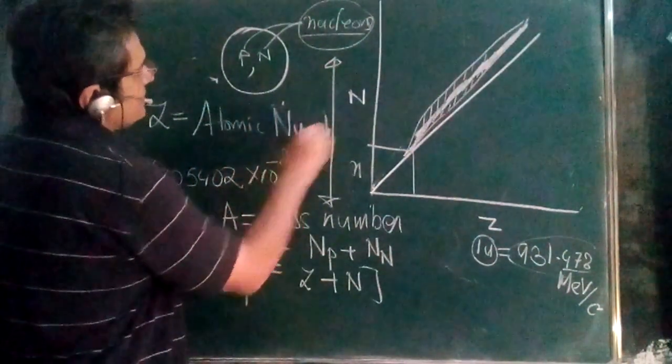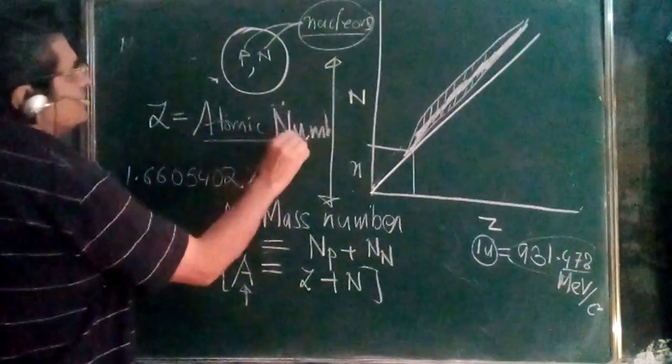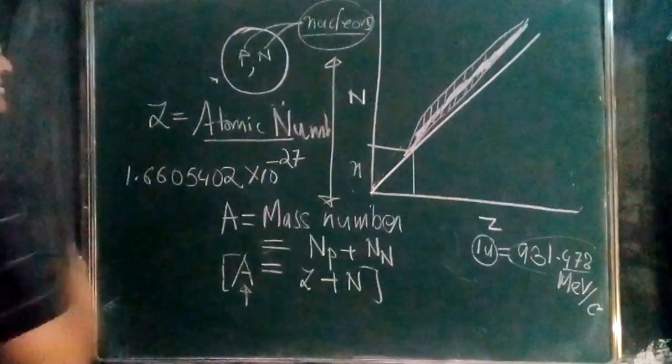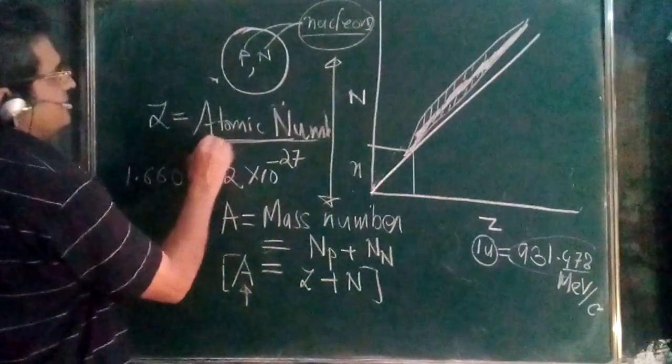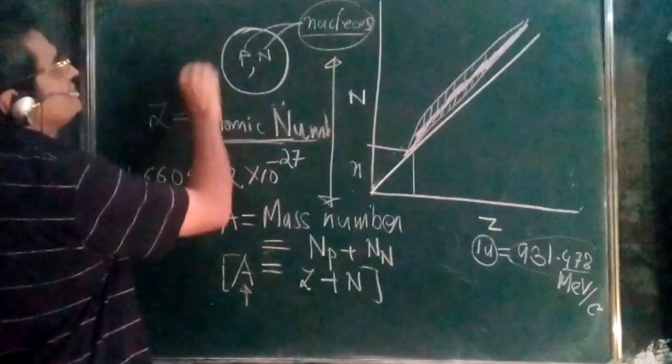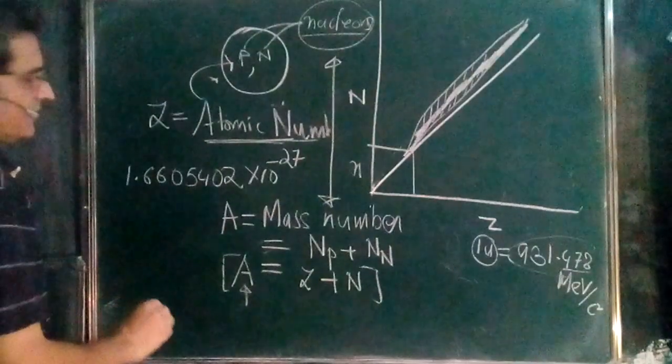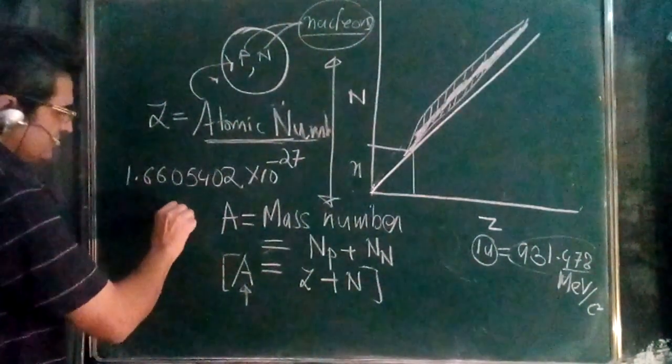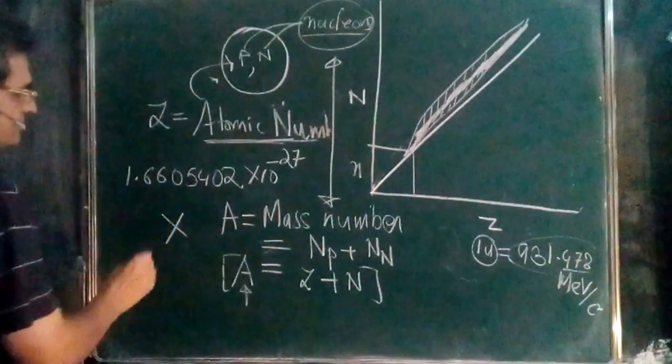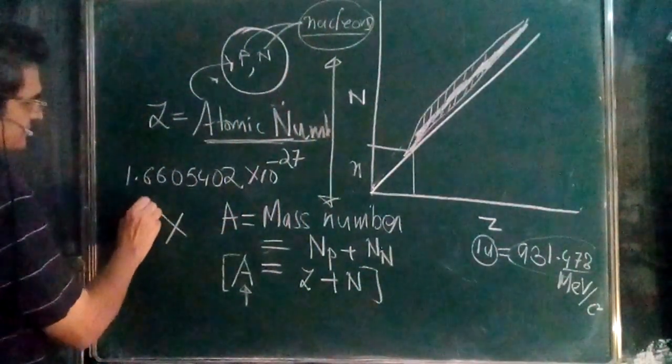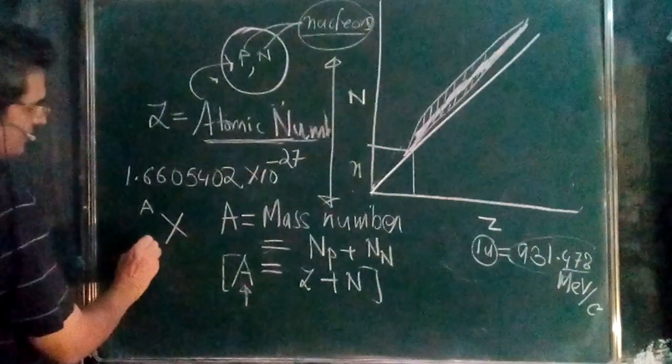Atomic weight is different - it's the weight of the atom including electrons. The atomic number Z means the number of protons only. Any nucleus is written with A and Z as two numbers. Right now we are focusing only on the nucleus, not the atom.